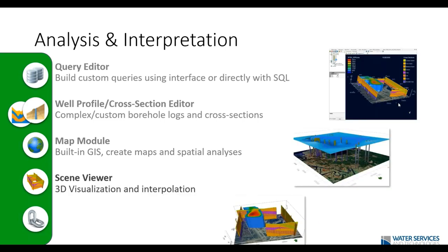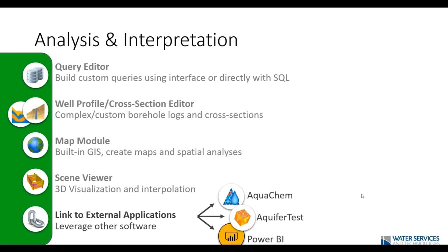We also have a tool for 3D visualization and interpolation, where we can interpolate 3D surfaces and display them in a 3D viewer. For example, we can display a 3D plume, animate it through time, and create a short video with it. We can also present water levels and animate the water levels dropping from pumping wells around the pit. We can also link Hydrogeo Analyst to external applications such as Aquachem for geochemical modeling and water quality analysis, Aquifer Test for slug test and pumping test analysis and interpretation, and Power BI where we can create fully customizable and dynamic dashboards to visualize information.